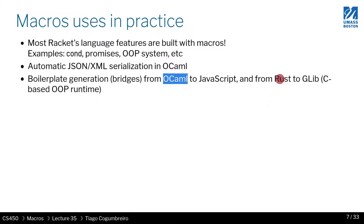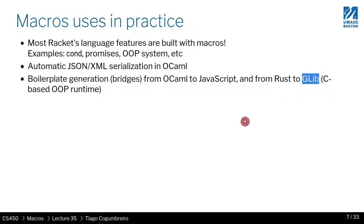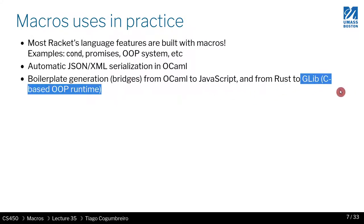For instance, in Rust, there are macro systems to simplify access to glib — a popular C library that gives you an object-oriented programming runtime interface. So you can access a C library's object-oriented programming runtime with syntax that is very close to Rust, by using a macro system.